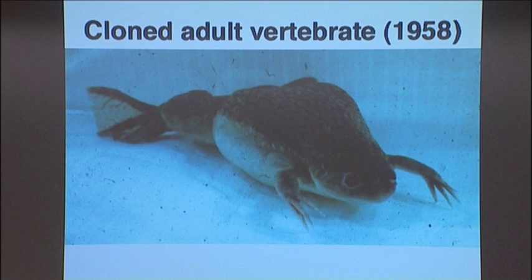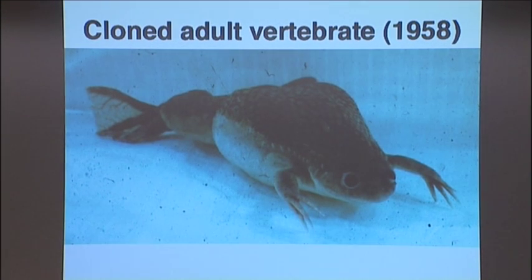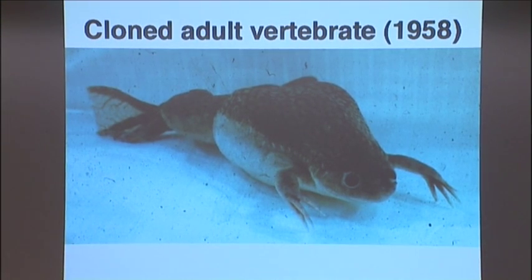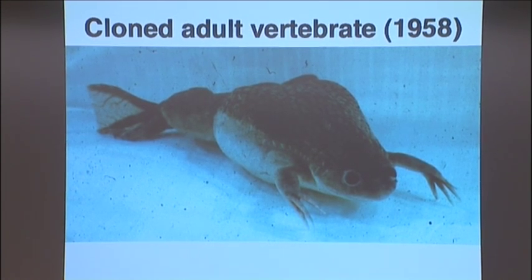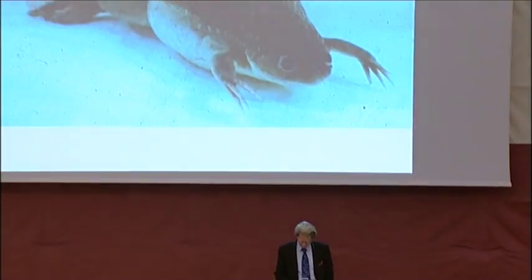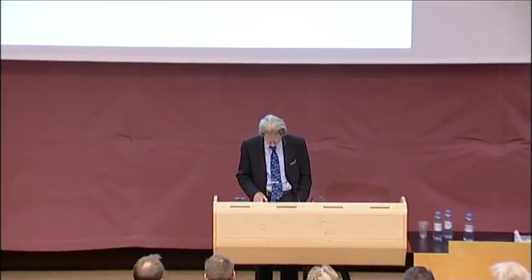This is the first frog I was able to obtain. We now call it cloning but at the time it was always called nuclear transfer. The important point is that this frog was entirely normal — it lived for about 20 years and had about 5,000 offspring, which is about as well as frogs ever do. People sometimes say that when you clone animals all you get is abnormalities — it's simply not necessarily true.